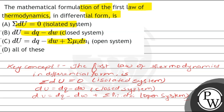The given question asks for the mathematical formulation of the first law of thermodynamics in differential form. Option A, summation over dU is equal to zero for an isolated system, which is correct. Option B, dU equal to dQ minus dW for a closed system, which is also correct. Option C, dU equal to dQ minus dW plus summation over mu_y dN_i for an open system, which is also correct. And option D is all of these, so option D is the correct and right answer.